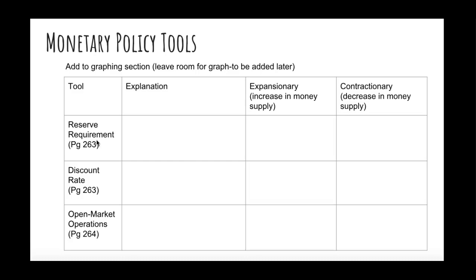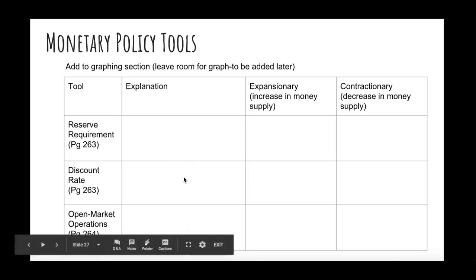The reserve requirement is the amount of money banks are required to keep on hand that they cannot lend out. For expansionary policy, you decrease the reserve requirement: banks don't have to keep as much in required reserves, so they have more in excess reserves, which means they can make more loans, increasing the money supply. Contractionary is the opposite: increase the reserve requirement, banks must hold more, have less excess reserves, and therefore make fewer loans.